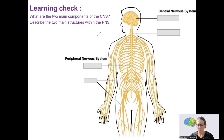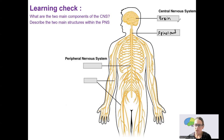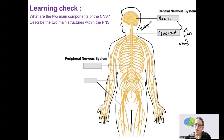So the central nervous system is composed of the brain and the spinal cord. Both of these are going to contain cell bodies and the axons that connect different regions. This is going to allow us to have integration of information and processing, so a control center.